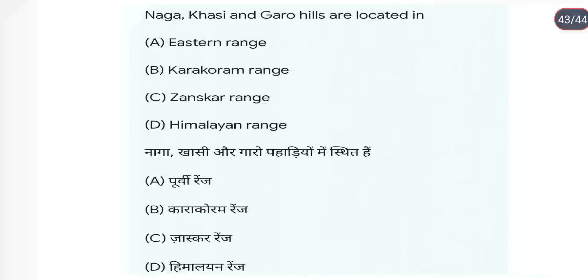Naga, Khasi, and Garo Hills are located in the Eastern Ranges of the Himalayan region.